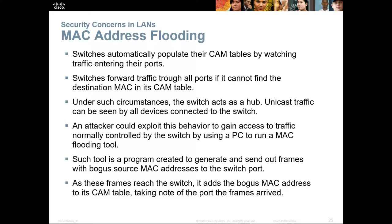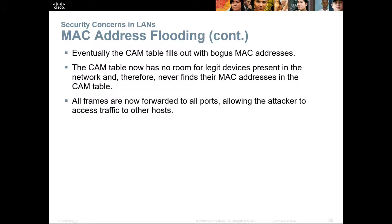MAC address flooding: switches automatically populate their CAM tables by watching traffic entering and exiting ports. If a switch cannot find a destination MAC, it forwards traffic through all ports — essentially acting as a hub. An attacker can exploit this by flooding the network with bogus MAC addresses, filling the CAM table. Once full, the switch no longer learns real MAC addresses, stops functioning normally, and forwards all frames on all ports — allowing the attacker to access traffic or overload the switch.